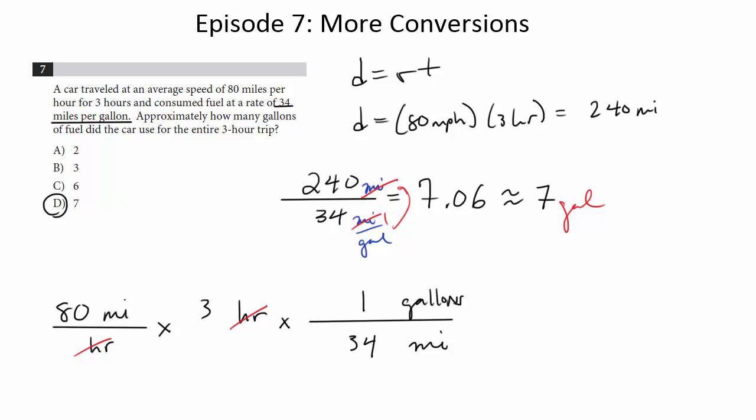Now notice the miles units cancel. I'm just left with gallons up top, which is exactly what I wanted, and now I do what I got to do. So 80 times 3 is 240, and now you can see, again, I'm doing 240 divided by 34, just like I did above,